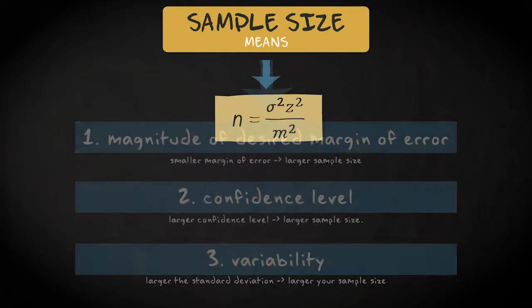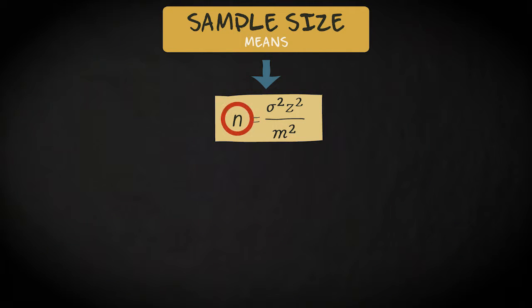This is displayed by the following formula. The size of your sample for which a confidence interval for population mean mu has a margin of error m equals the standard deviation in your population squared, multiplied with a z-score corresponding to your chosen confidence level squared, divided by the margin of error you allow, also squared.